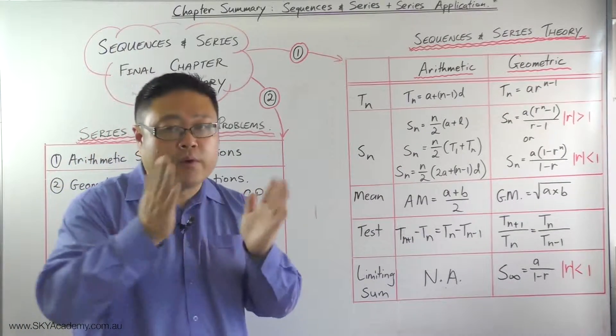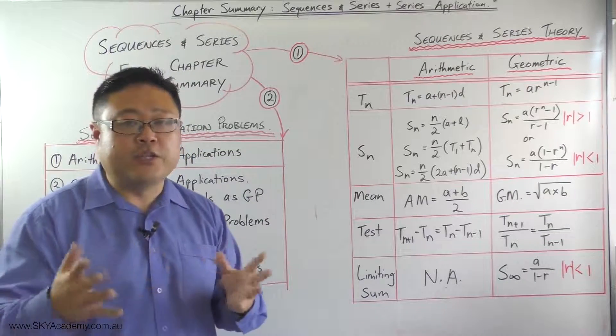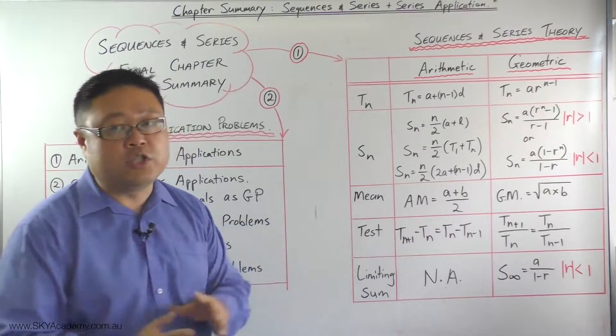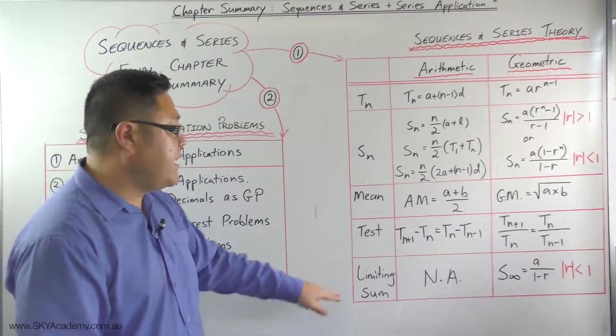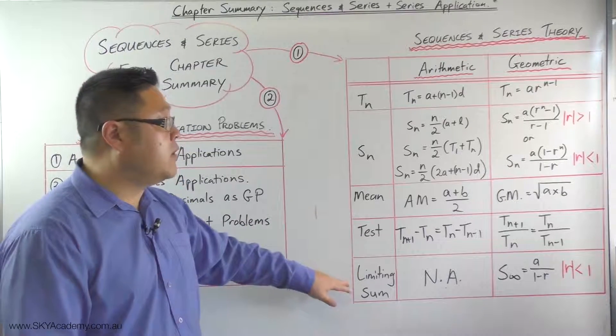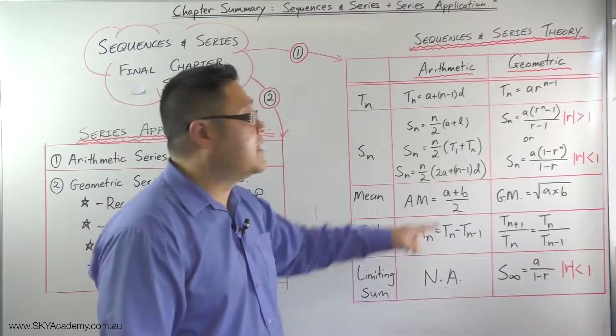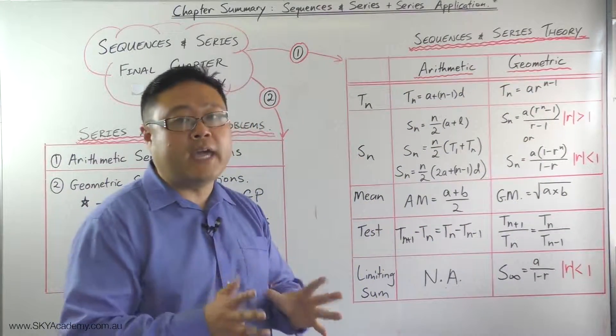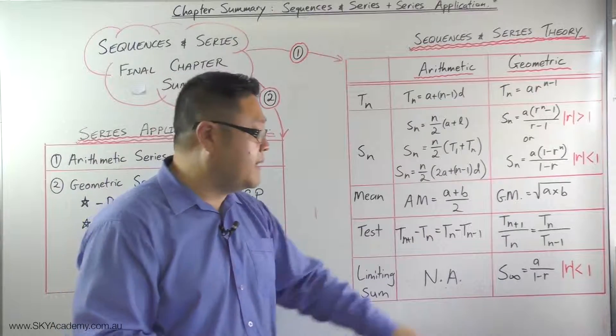We've got the test for how to test whether three terms are in arithmetic or geometric progression. And then finally, in the episode that we did on limiting sum, we worked out that for a geometric series you can have a geometric limiting sum.